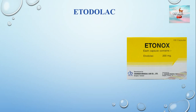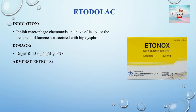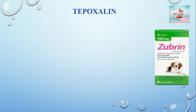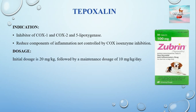Etodolac inhibits macrophage chemotaxis and has efficacy for the treatment of lameness associated with hip dysplasia. Its dose rate in dogs is 10–15 mg/kg orally. Adverse effects include gastrointestinal ulceration, vomiting, and weight loss. Tepoxalin is an inhibitor of COX-1, COX-2, and 5-lipoxygenase, used to reduce components of inflammation not controlled by COX isoenzyme inhibition. Its initial dosage is 20 mg/kg, followed by a maintenance dosage of 10 mg/kg per day. Adverse effects include gastrointestinal-related diarrhea and vomiting.